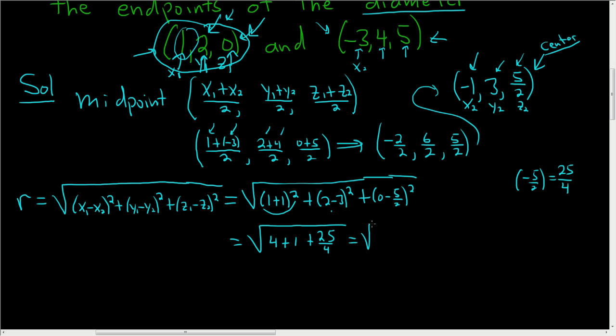This is equal to 5 plus 25 over 4, and we can multiply the 5 by 4 over 4 so that we can actually add the fractions. So now we get 20 plus 25 divided by 4, and so this is the square root of 45 over 4. So that will be our radius r.